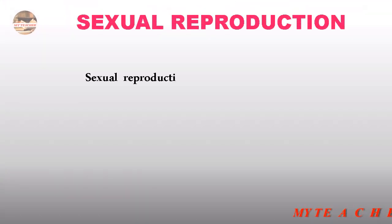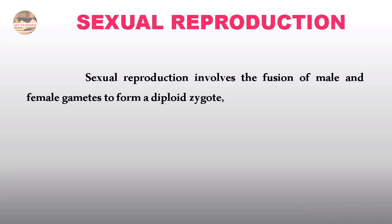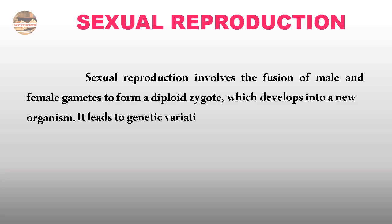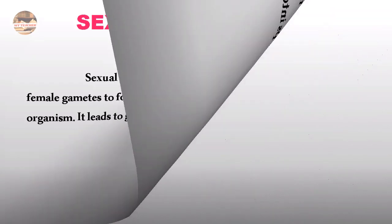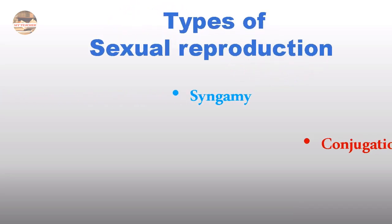Sexual Reproduction involves the fusion of male and female gametes to form a zygote, which develops into a new organism. It leads to genetic variation. The types of Sexual Reproduction are Syngamy and Conjugation.